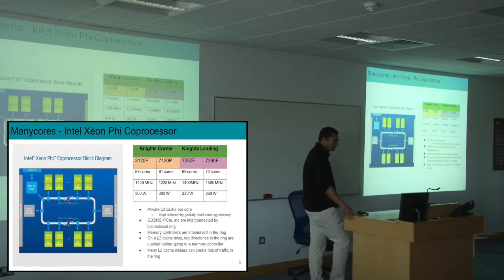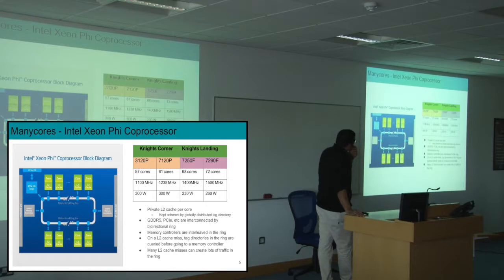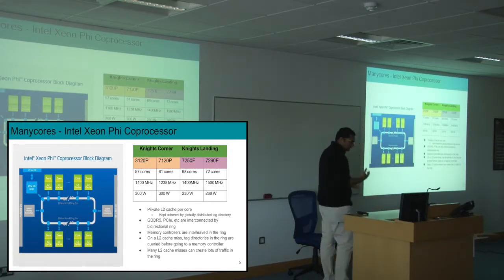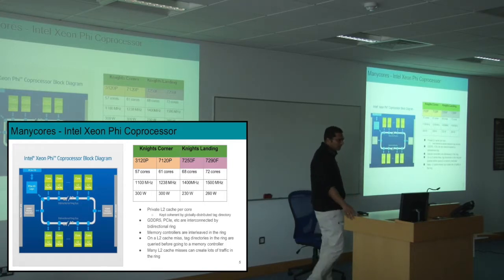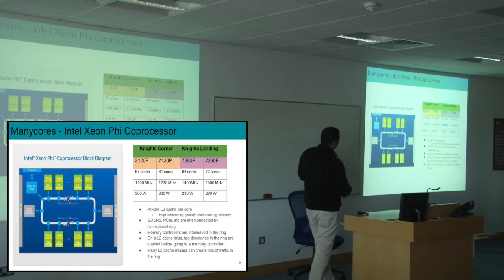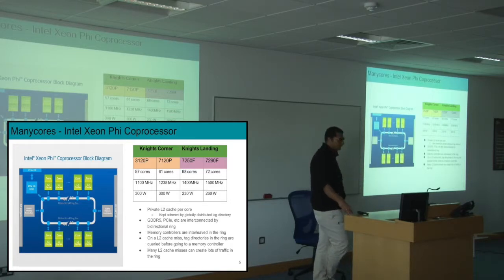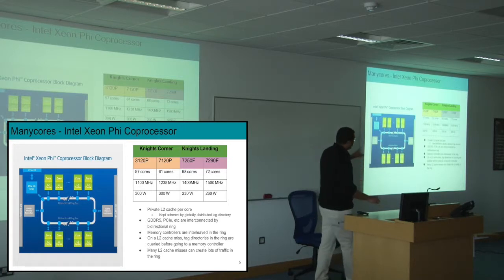This is the Intel Xeon Phi co-processor — the competing accelerator solution to NVIDIA's GPUs. I'm showing you the Knight's Corner and Knight's Landing offerings. The 3120P is quite old, but this is what we have in our lab and have experimented with. It has 57 cores. Now we have 72 cores. Remarkably, they have increased the frequency but actually reduced the power, so there must have been real innovations in Knight's Landing. They are again cramming more and more cores.